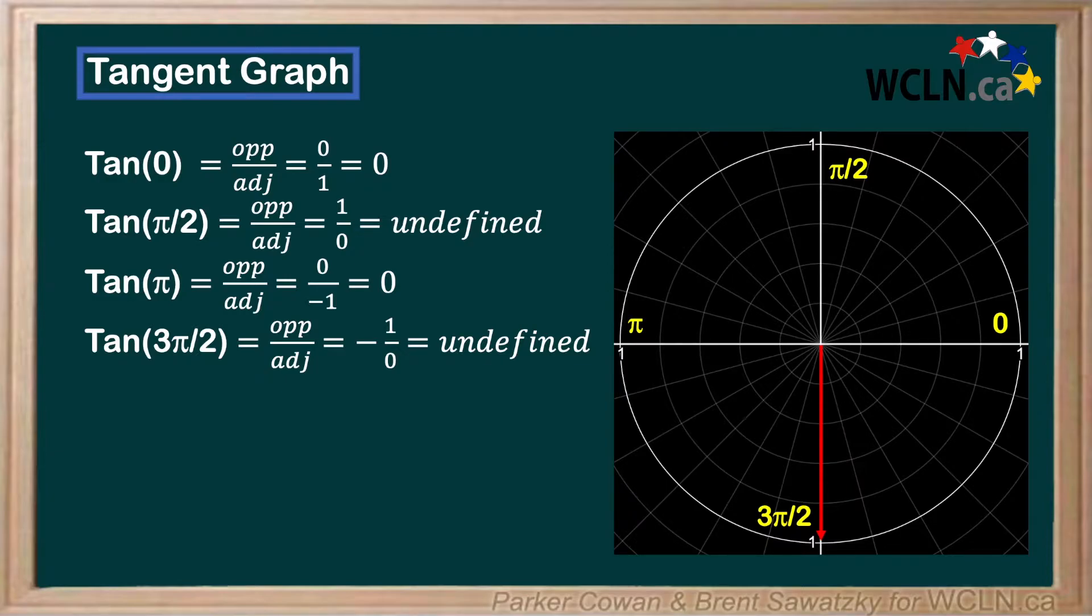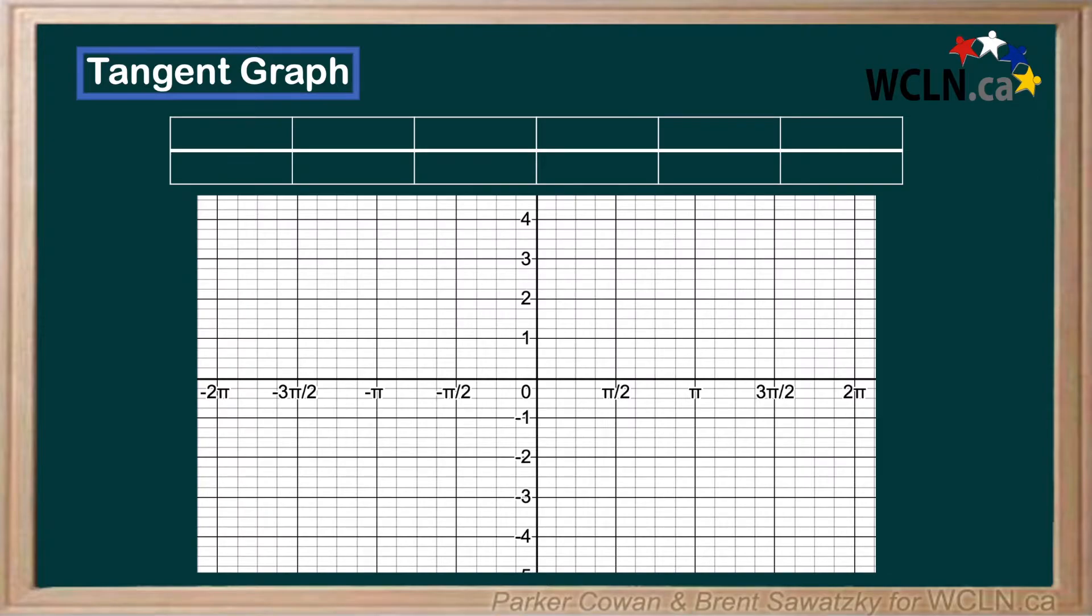Also note, for tangent, it only takes one half revolution around the unit circle before the values repeat again, contrary to sine and cosine, where it took one full revolution. So, what does this translate to on a graph?